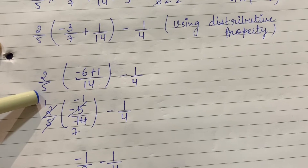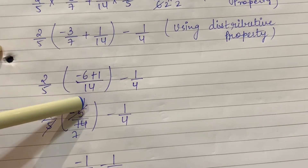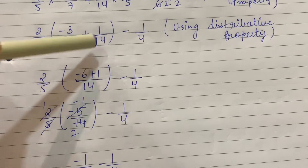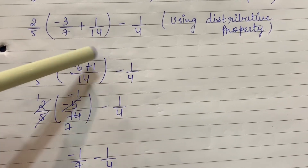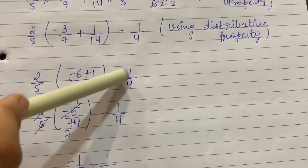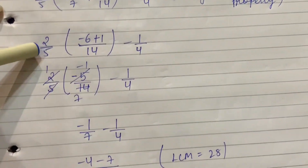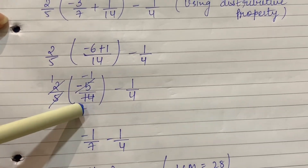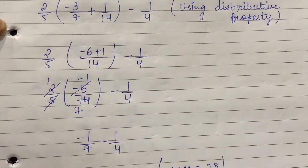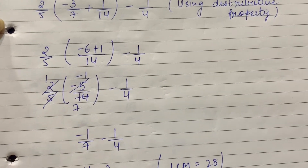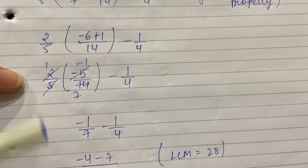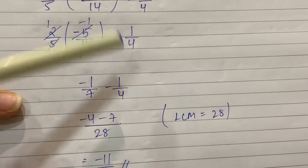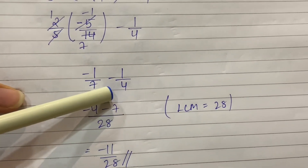2 upon 5 stays outside. 2 sevens are 14, minus 3 into 2 is minus 6. 14 ones are 14, 1 ones are 1. So minus 6 plus 1 is minus 5 upon 14, and minus 1 upon 4 remains as it is. 5 cuts with 5, giving minus 1 upon 7 upon... and minus 1 upon 4. So it becomes minus 1 upon 7 and minus 1 upon 4.